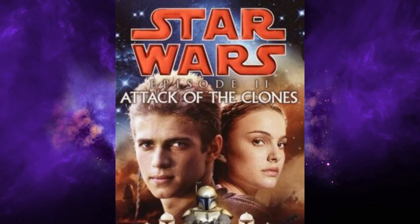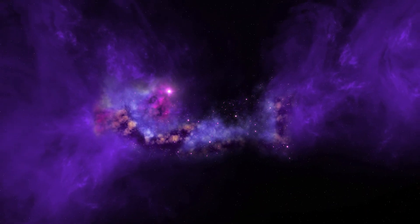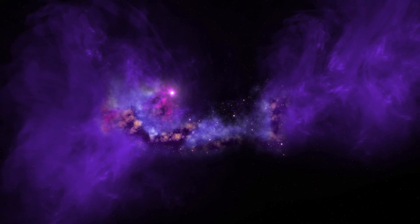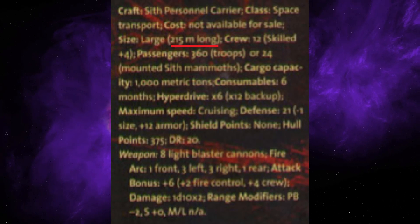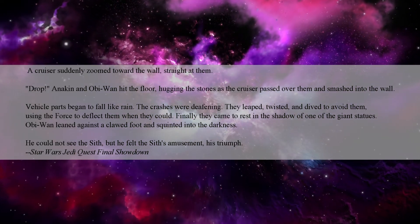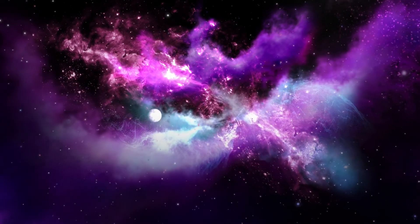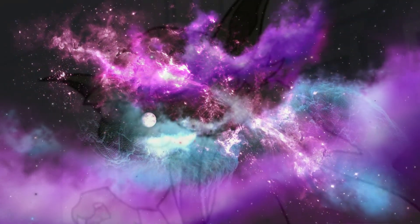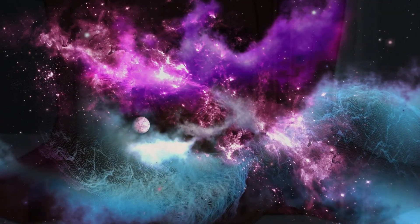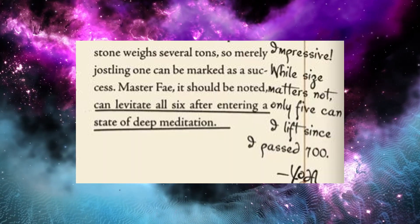We know that as of Attack of the Clones, Count Dooku is equal in Force Power to Grandmaster Yoda. Yet despite Kenobi stating that Dooku was stronger on Geonosis, on Vjun, Dooku easily tossed 215 meter cruisers at both Anakin and Obi-Wan. This is easily one of Dooku's best feats, and seeing as he is equal to Master Yoda, Master Yoda should also be capable of replicating this feat. Yet at this point, Master Yoda could only lift five of the stones.